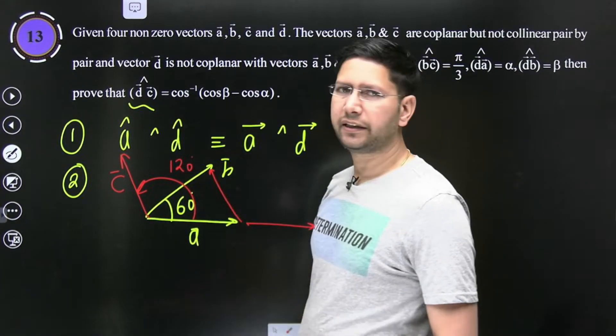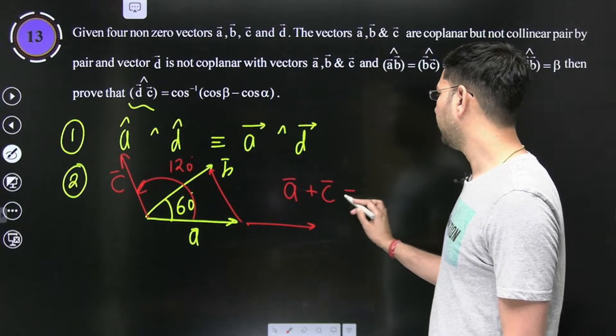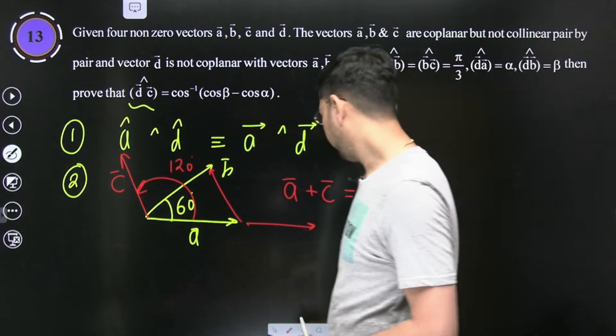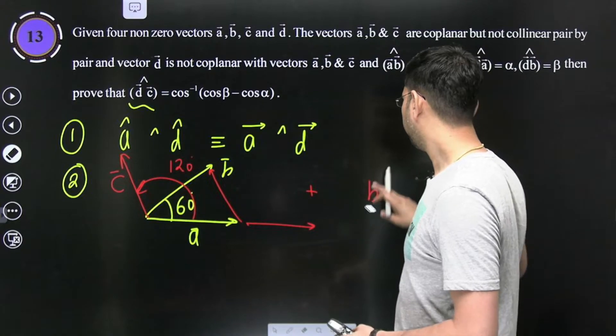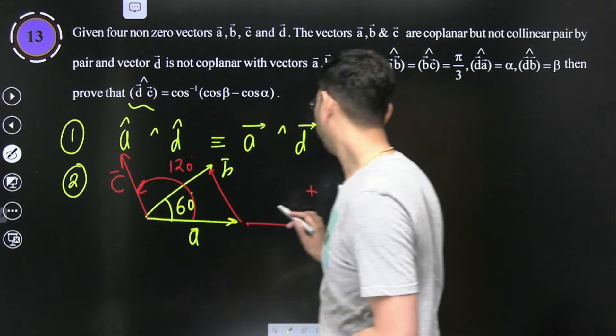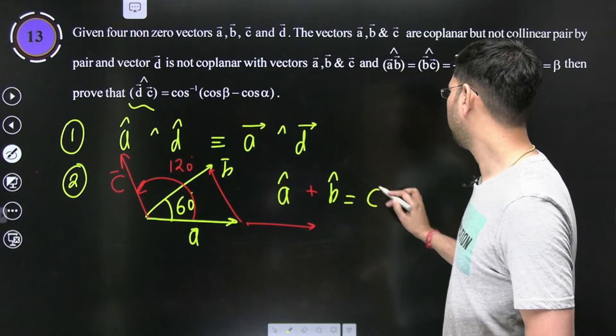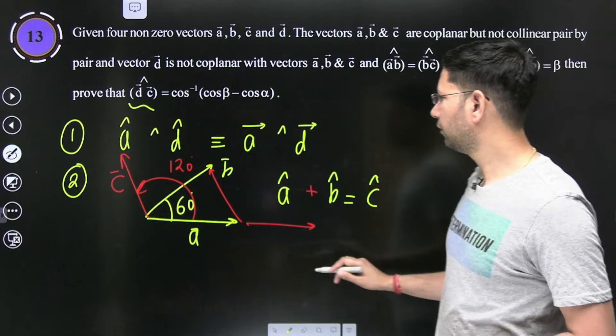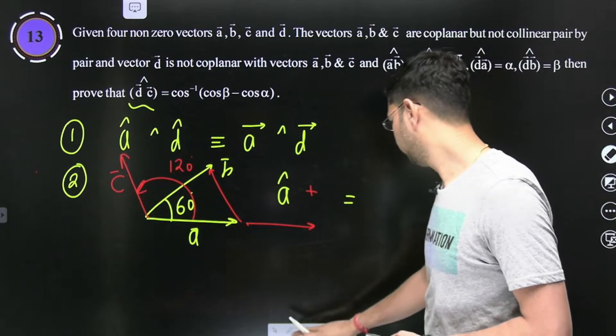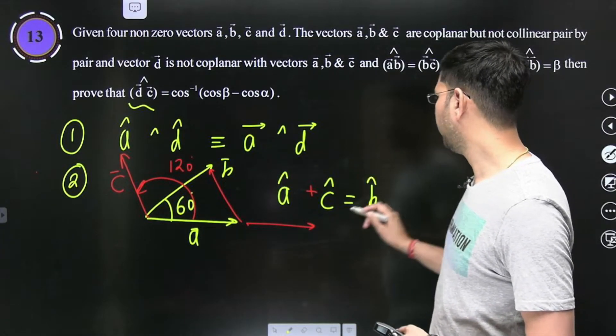Aur a plus c kitna aayega, aapka b aayega. Bachon mein likh deta hu. Equilateral triangle direction a plus c is equal to b. Sorry, mein na galat dikh diya. A cap plus b cap. Bachon, unko topi penhani padegi. A cap plus b cap is equal to c cap hai. Phir galat dikh diya. A cap plus c cap hai, sorry.